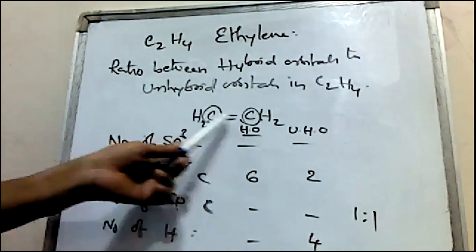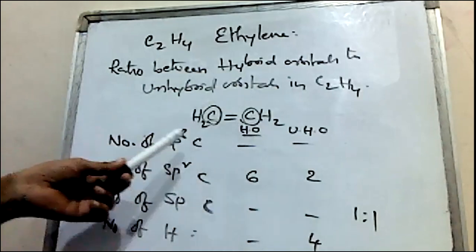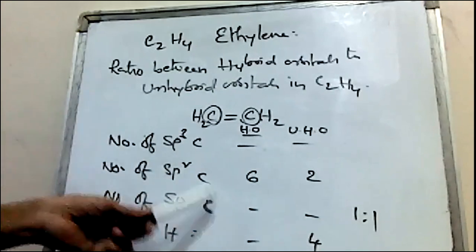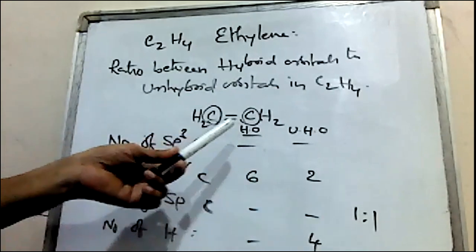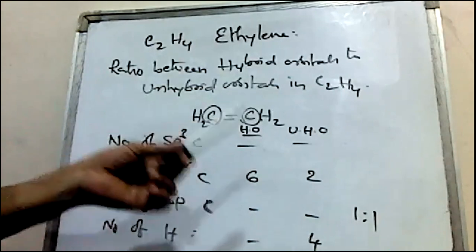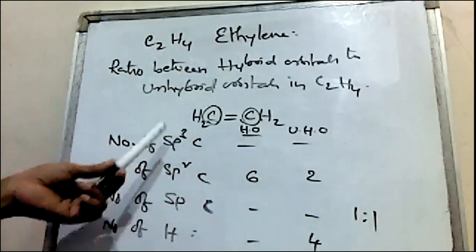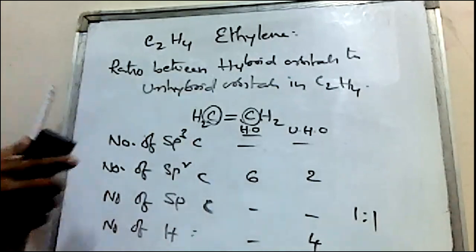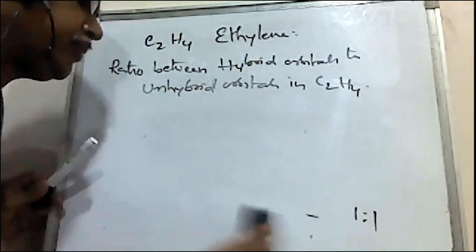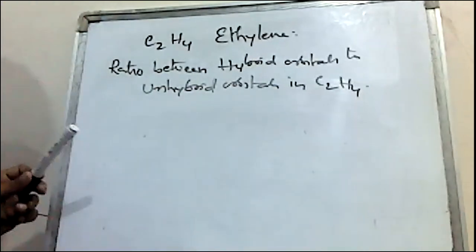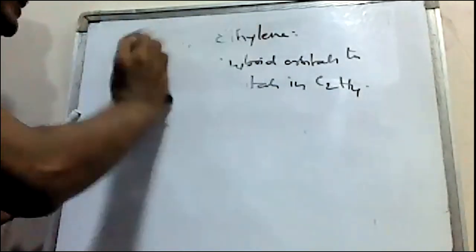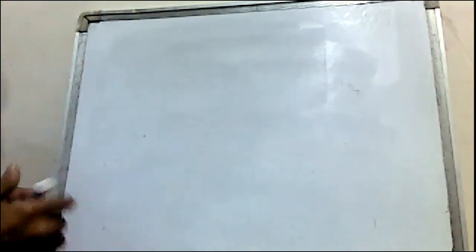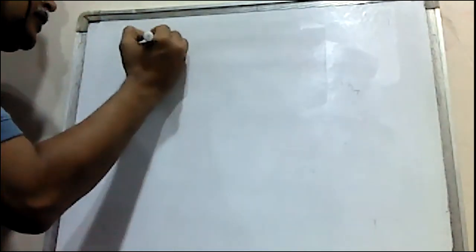First of all, we identify the hybridization type of each carbon: SP3 carbon, SP2 carbon, or SP carbon. Let me discuss one more example — finding the same ratio between hybrid orbitals to unhybrid orbitals in a compound.